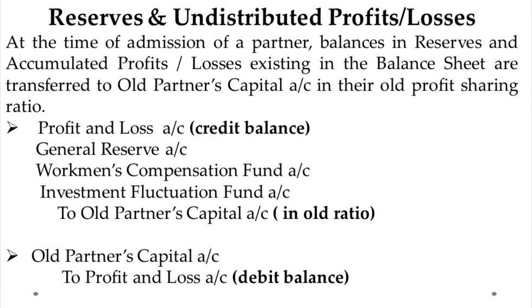And if you have been given a balance sheet asset side with some balances, then we also give the opposite effect — we will credit it. So what will happen in the journal entry? All partners' capital account debited to P&L account debit balance.